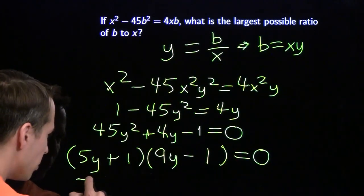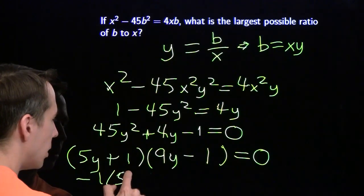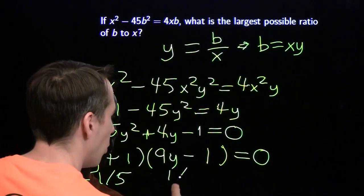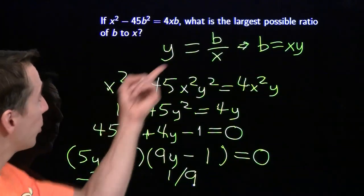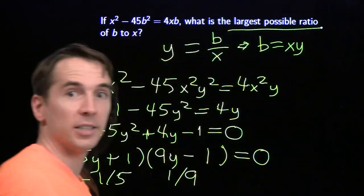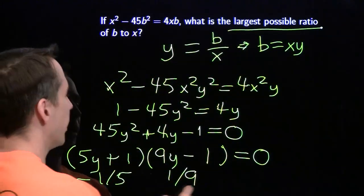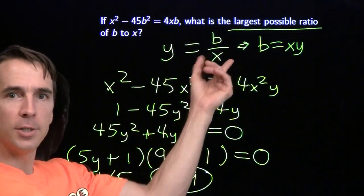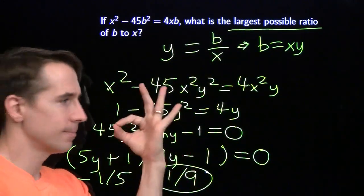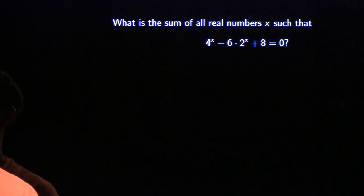So now we can find our roots. This gives us negative 1 fifth, and this over here gives us 1 ninth, and we want the largest possible ratio, 1 ninth. There we are. Substitution for simplification. We like that. Let's try it again.